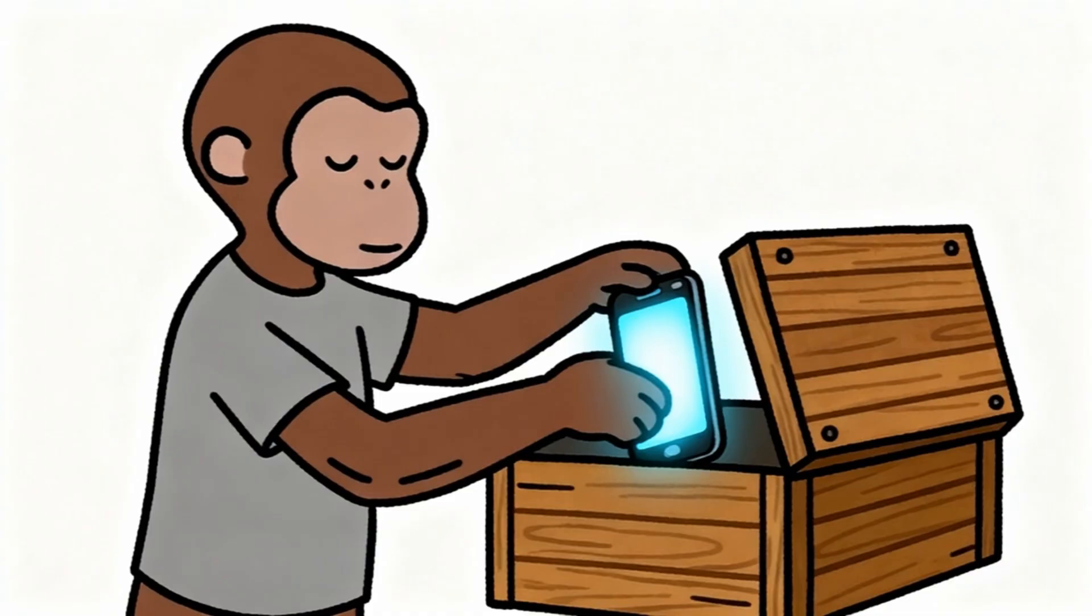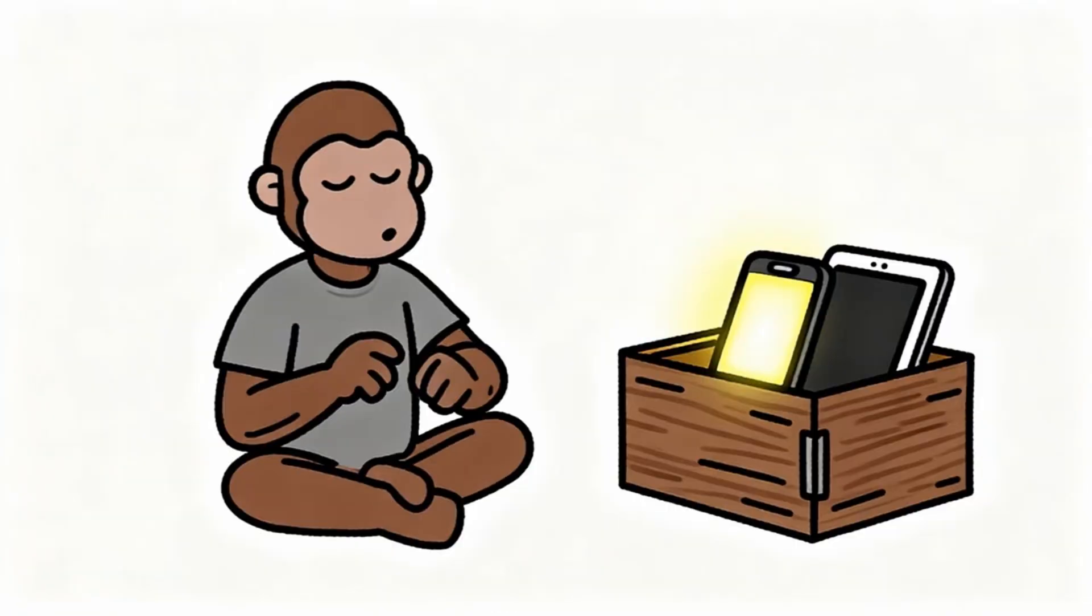This explains why getting artificial dopamine banana feels good for only a few seconds before monkey wants another one. The wanting never stops because dopamine system never turns off when bananas are constantly available. Monkey brain stays in permanent state of craving without ever reaching satisfaction.